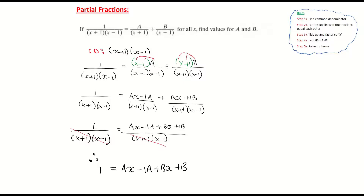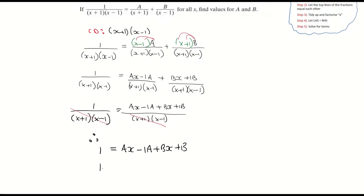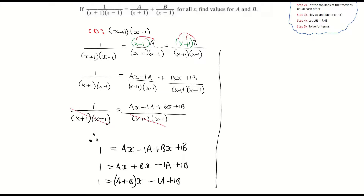I'm going to rearrange that, putting the x terms first followed by my constants. So that is: 1 is equal to ax plus bx minus 1a plus 1b. Now I'm going to factorize out the x, so 1 is equal to (a plus b) times x, minus 1a plus 1b.